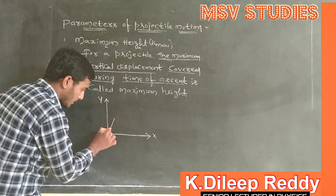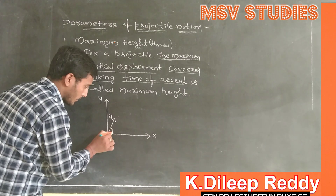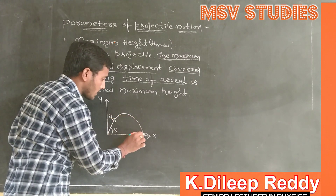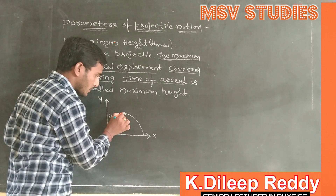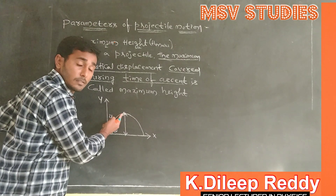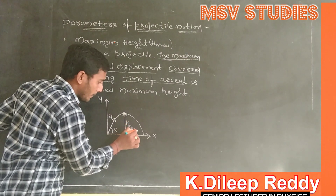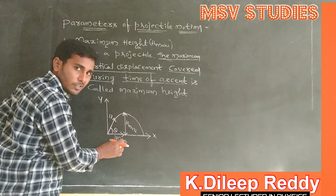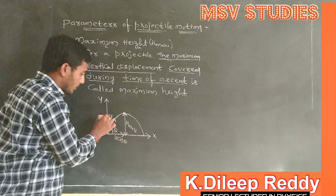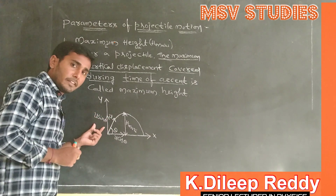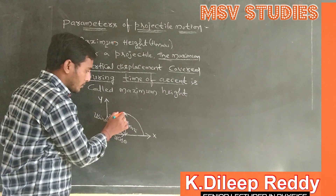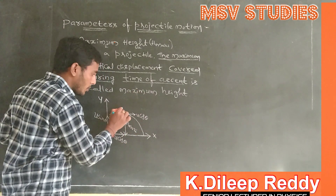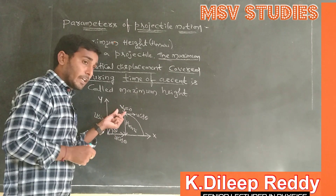Suppose a body is projected into air with initial velocity u, and this velocity vector makes an angle theta. The trajectory of the projectile is parabolic. The highest point represents the maximum vertical displacement traveled by the projectile, which we call maximum height. The component of velocity along horizontal direction is u cos theta, and along vertical direction is u sin theta. At maximum height, horizontal velocity remains u cos theta, while vertical velocity becomes zero.